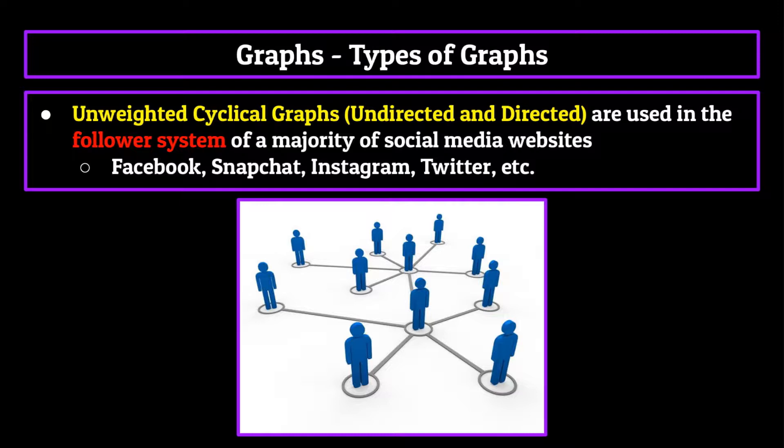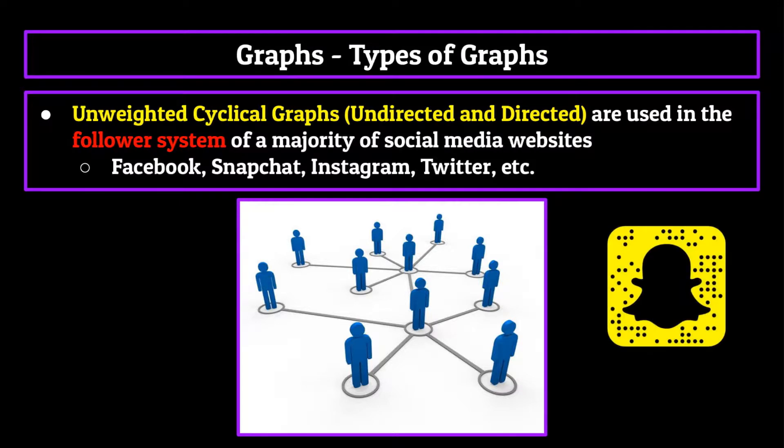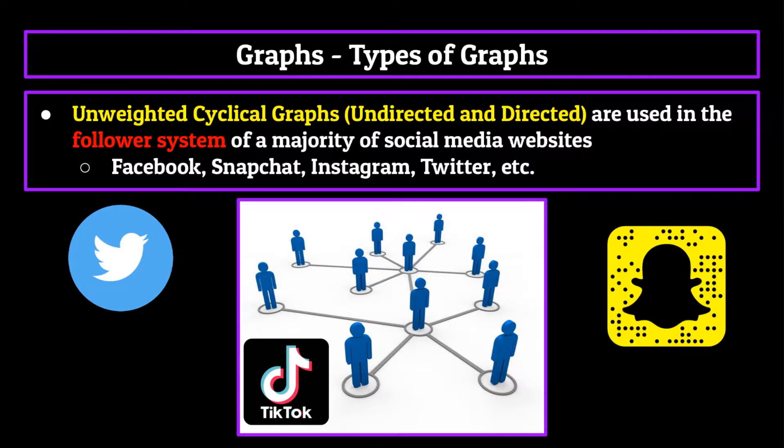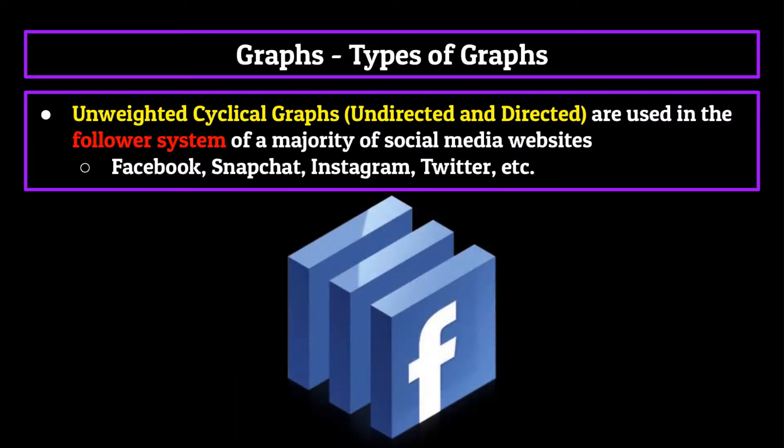However, this example encompasses many more social media platforms other than those two. Snapchat, Twitter, TikTok, all of these platforms through which you have an account can represent your follower following base through a graph and oftentimes do. Facebook even has a graph API, which you can use to interact with the graphs that they use to make up each user's web of friends. As you can see, graphs and their many different forms provide much of the functionality you interact with in everyday life, contributing to almost any facet of the internet.